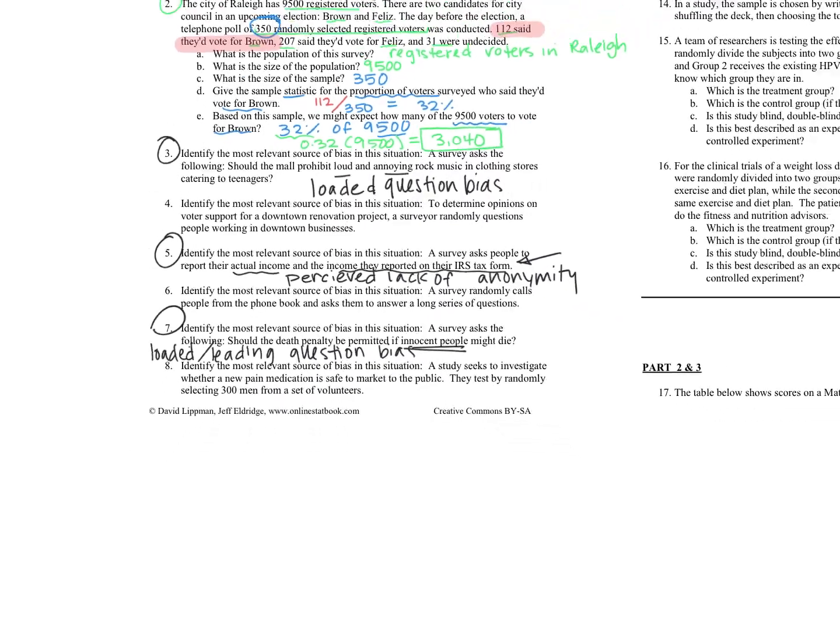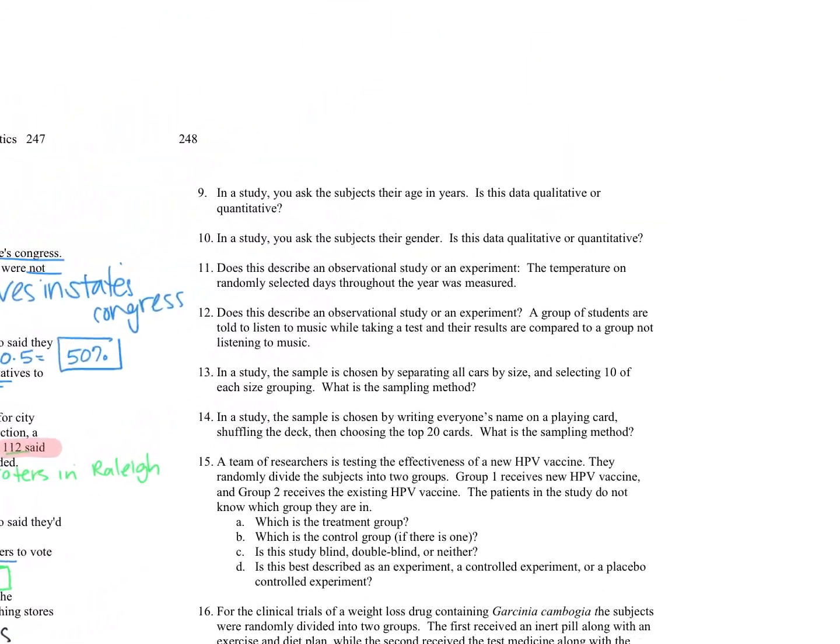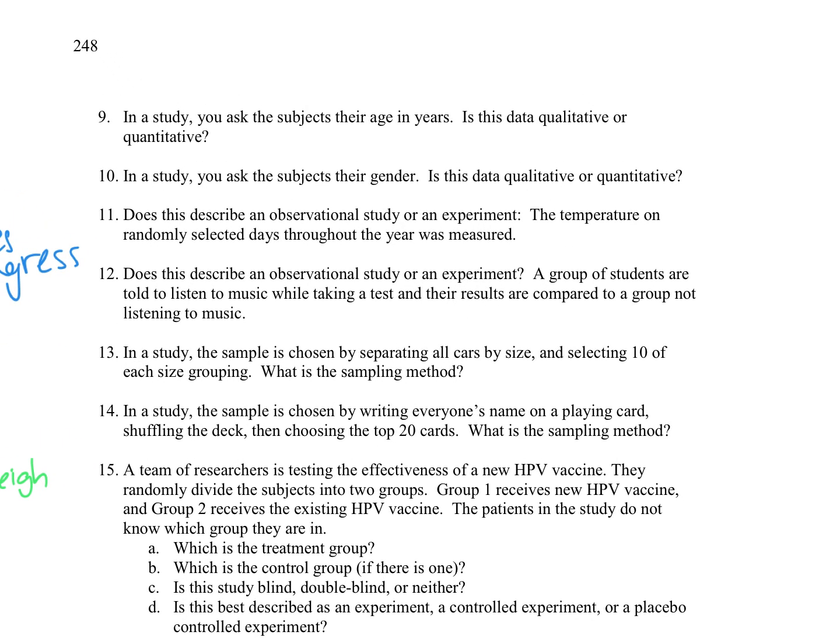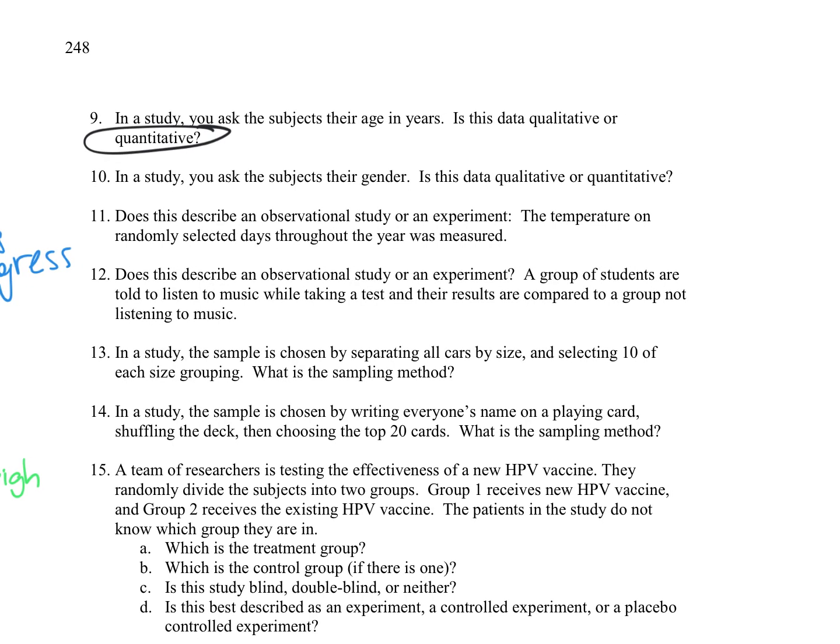Alright. And then we're going to scoot over to the next page. Number nine, in a study, you are asked, you ask the subject, their ages and years, is this data qualitative or quantitative? That would be quantitative. Remember that we're talking about a quantity versus a quality. Sometimes we even say category or categorical. But we would be quantitative here. I'm looking at number 10, just because it's right here. It says, when you ask the students, their gender. Well, that's not going to come out with any kind of number. So that would be qualitative. Those would be qualities we're seeing there.